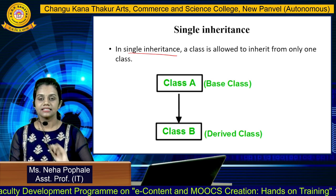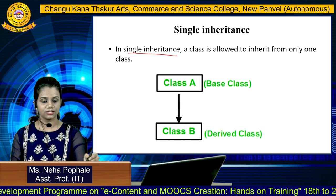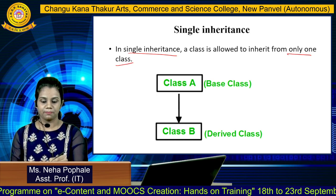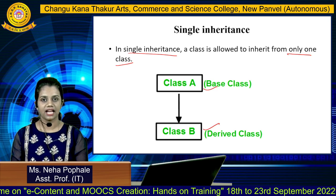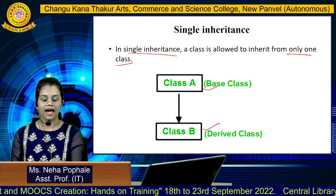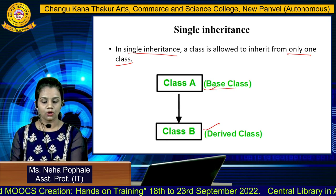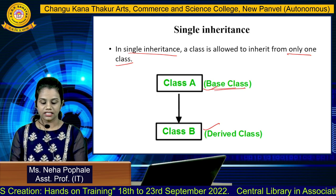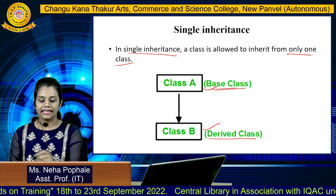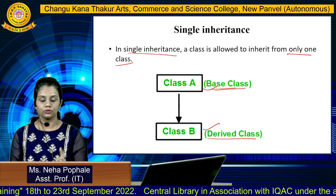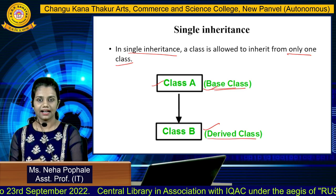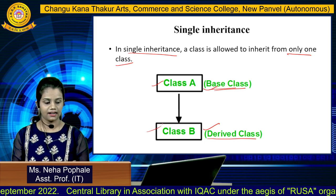What is single inheritance? As the name suggests, it has only one parent class and one child class — one base class and one derived class. Parent class is also called base class, and child class is also called derived class or subclass. You can see only two classes — one is the parent class and one is the child class.